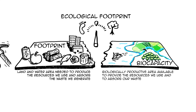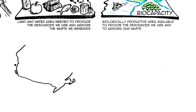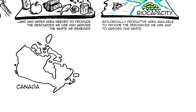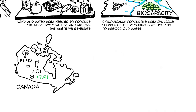I live in Canada and our ecological footprint in 2007, published in 2010, was 7.01 — meaning that to provide what we consume every year we need 7.01 global hectares per person. But we live in a huge country and our biocapacity was actually 14.92 global hectares per person, giving a difference of 7.91, which means that technically we are an ecological creditor country.